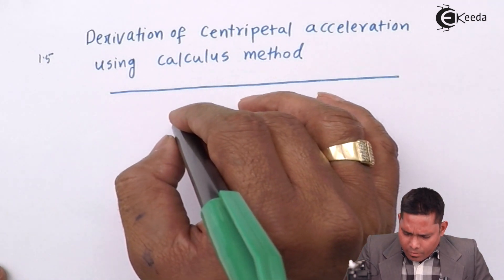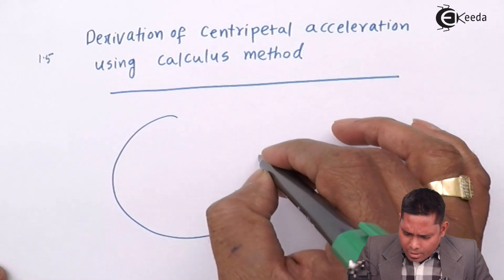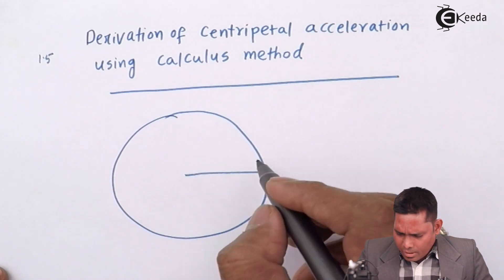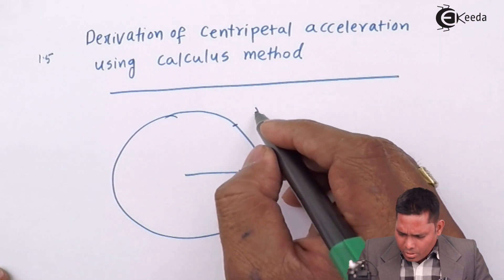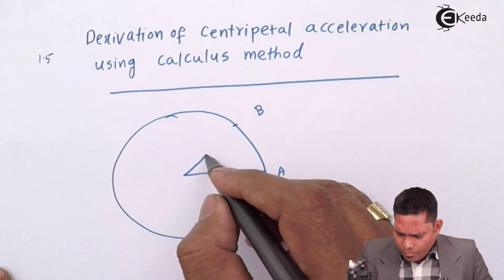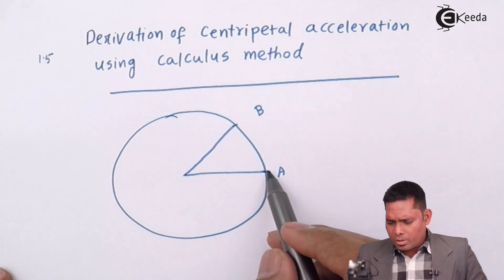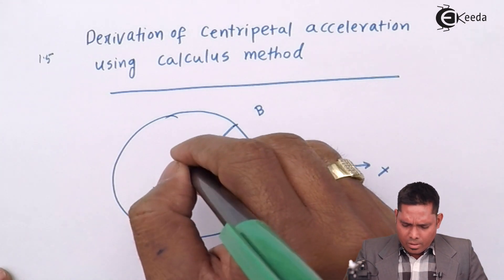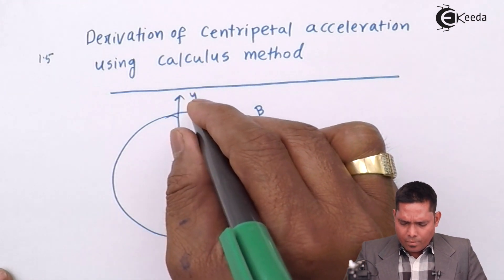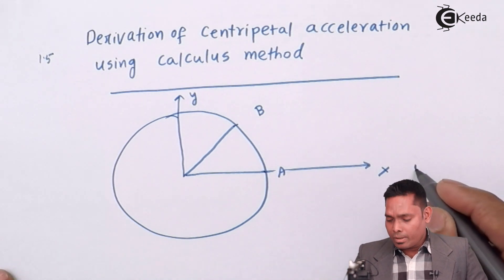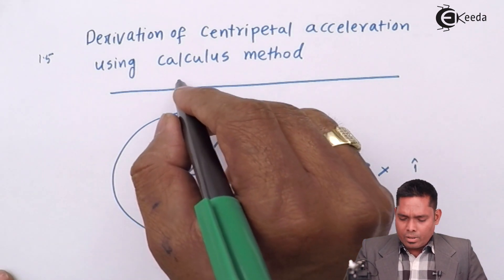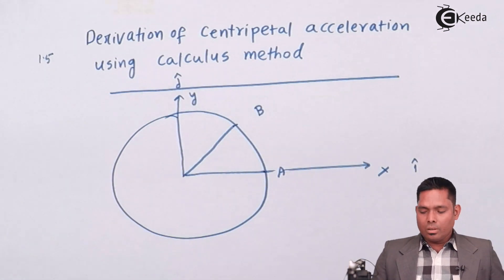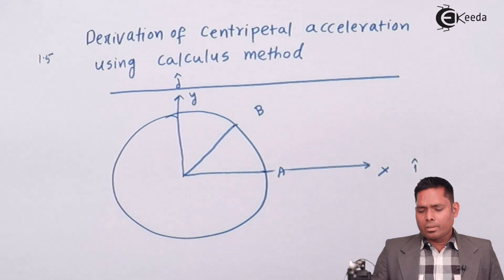In the calculus method, first of all let us say this is a circle. This is the radius at position 1 and this is at position 2, with this as the reference line. This is the x-axis and this is the y-axis. In the x-axis direction the unit vector is i-cap, and in the y-axis direction it is j-cap.